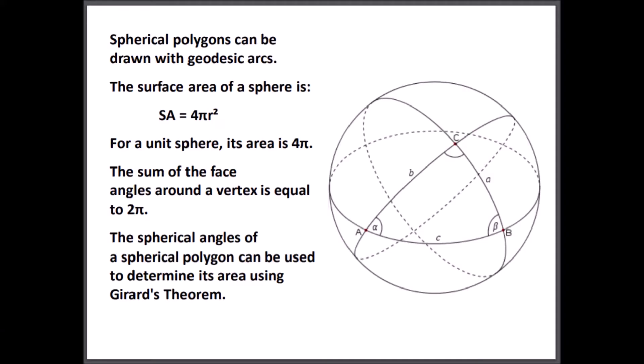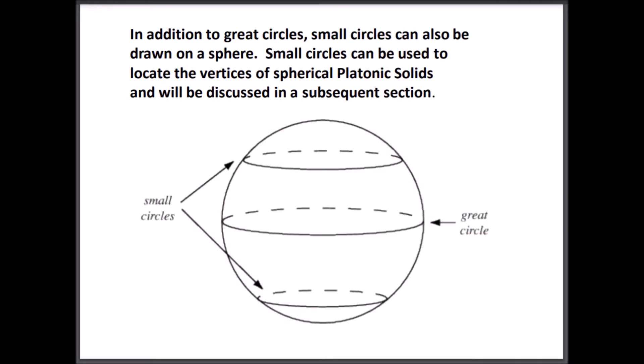Let's start with some basics. Spherical polygons are drawn with sections of geodesic arcs. The intersection of these arcs defines spherical angles. Geodesic arcs are great circles on a sphere that divide it into equal hemispheres. In addition to great circles, there are lesser or small circles, which can be drawn on a sphere as well. I will show in a subsequent video that these circles are quite important and can be used to construct the spherical versions of the five platonic solids.